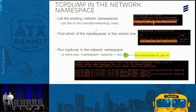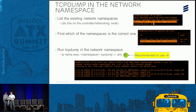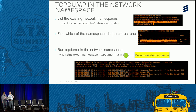TCP dump in the namespace: how do you find the namespace name and actually go into it? One important option to point out is the -l -n option. TCP dump is awesome but not perfect — put the -ln option and it becomes a lot better. It doesn't buffer the packets so you start seeing the packet flow right there and it doesn't overflow the buffer. If you take nothing else away from this presentation, take the -ln option.